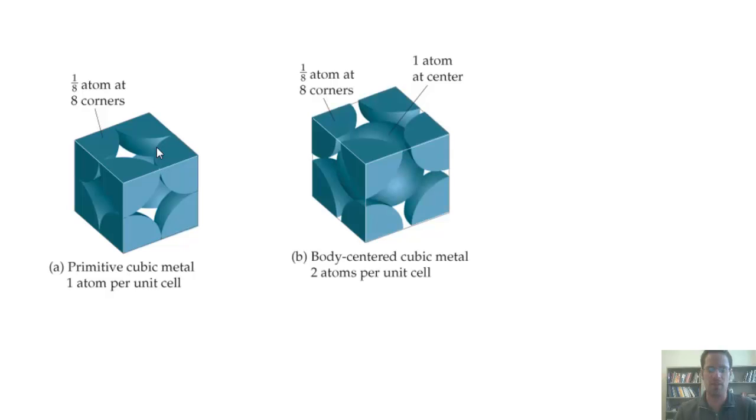Here's an analogous picture of a body-centered cubic unit cell. You can see once again that the spheres at the corners only have one-eighth of them inside the box. This central atom, however, is contained completely in the box, so it would count as one entire atom.